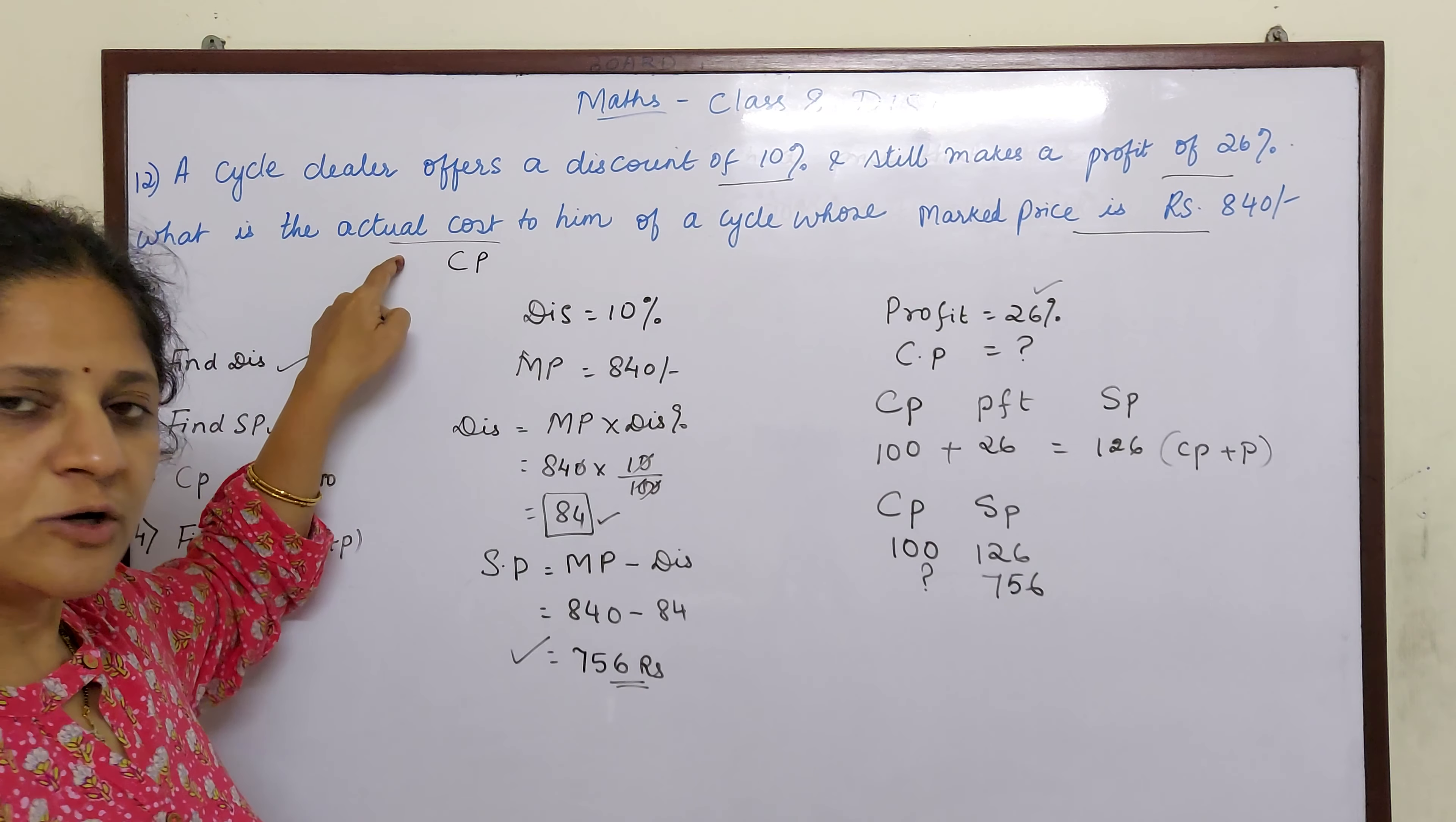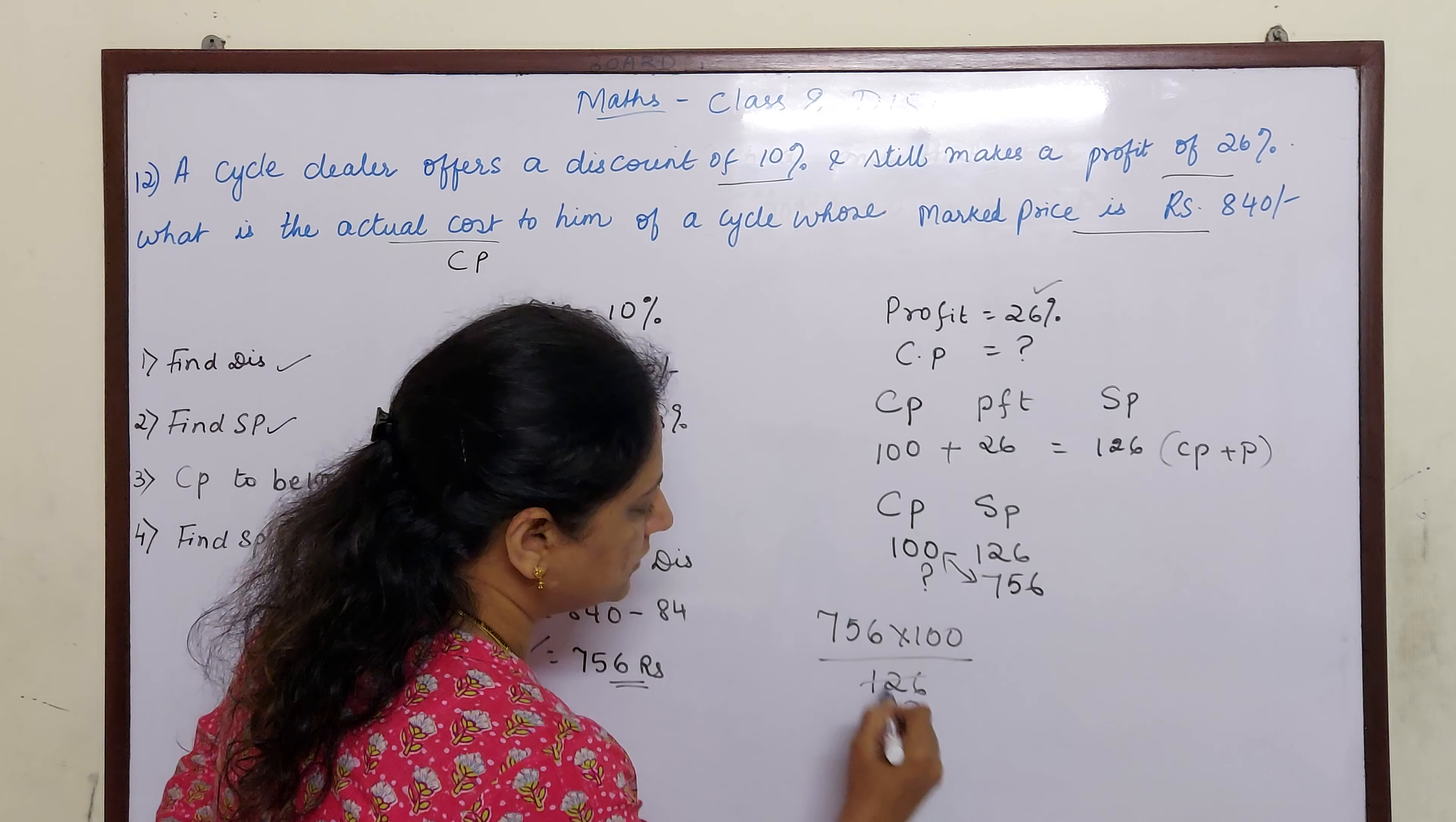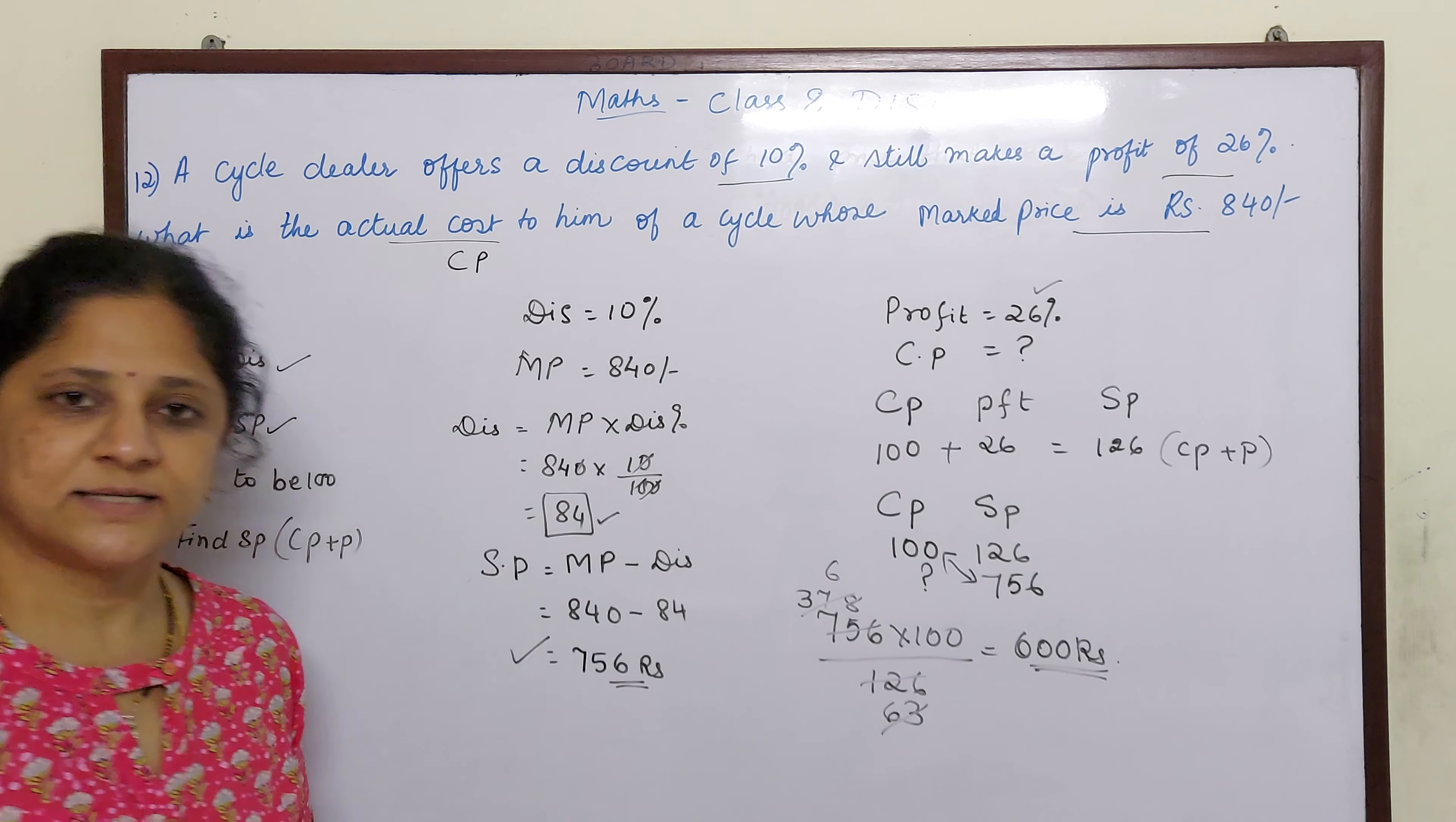What is the actual cost? We will do cross multiplication. 756 into 100 divided by 126. Then you can do the cancellation: 2 6s are, 2 3s are, 2 3s are 6, 2 7s are 14, 2 8s are 16. Then after doing the cancellation you will get 6. So 6 into 100 is 600 rupees. So our cost price is 600 rupees.